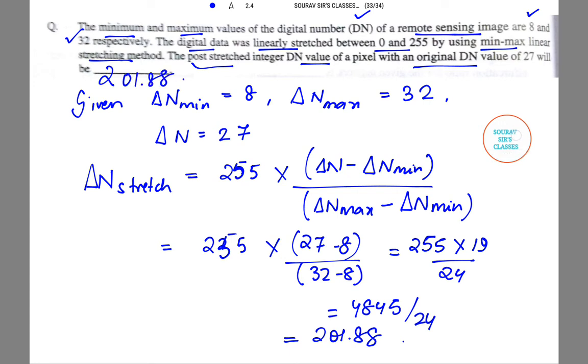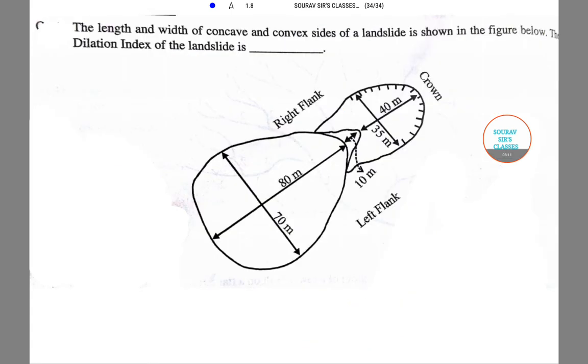Moving on to the next question. The length and width of concave and convex sides of a landslide is shown in the figure. The dilation index has to be calculated. Dilation in the length of landslide is 80/40, which is 2.